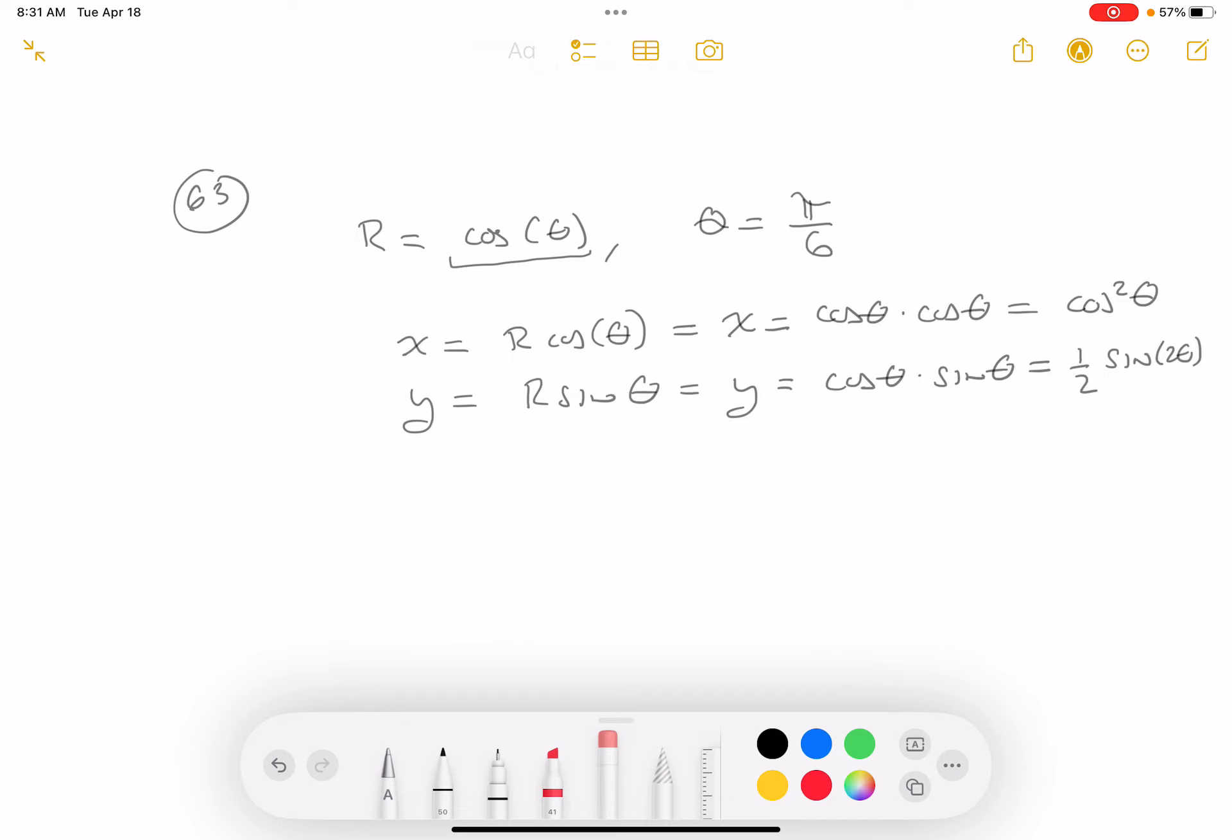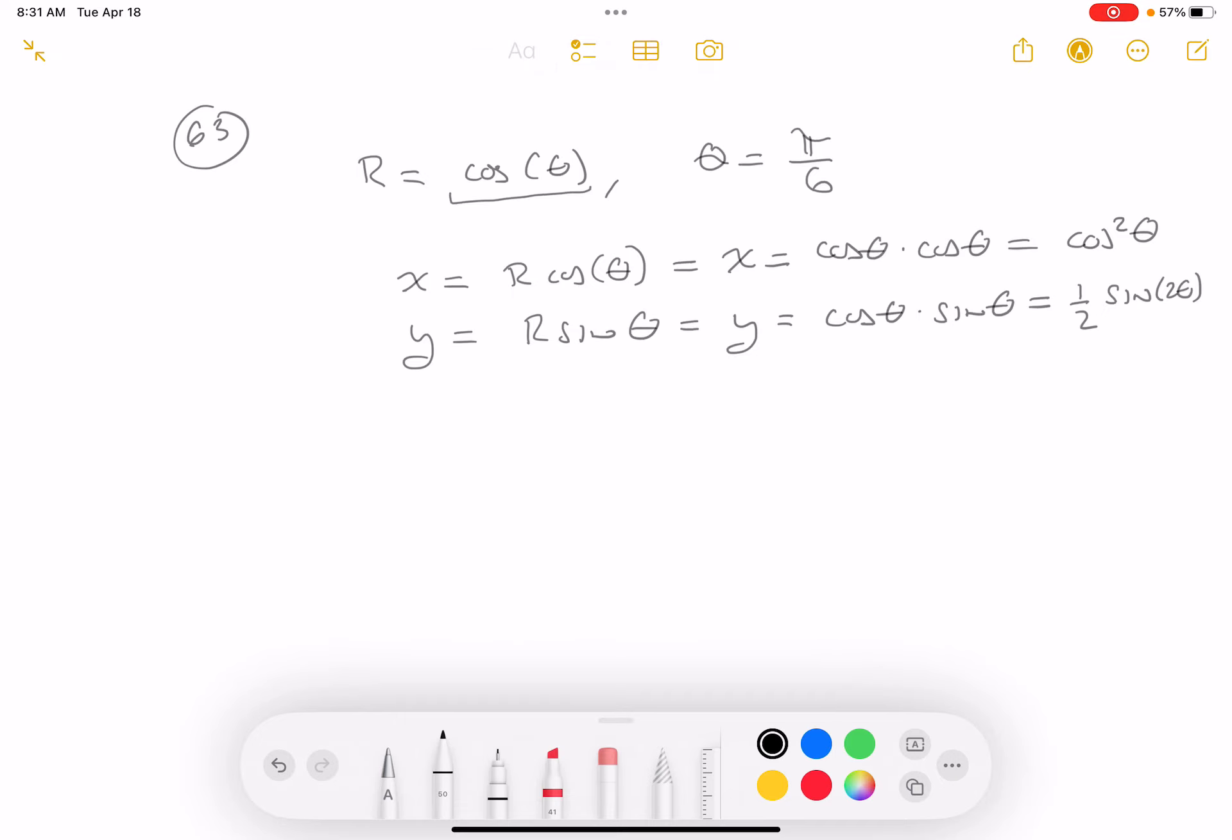I want to write down dy/dx, which equals (dy/dθ)/(dx/dθ). dy/dθ is (1/2) cos(2θ) times 2—that's done.